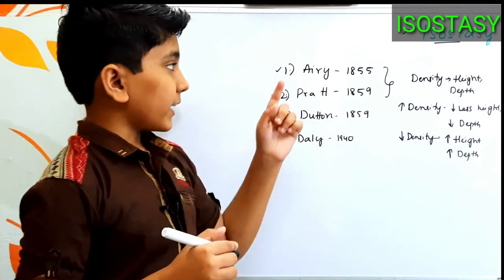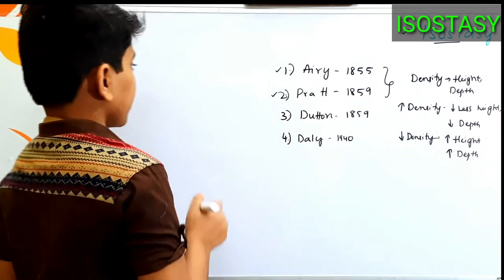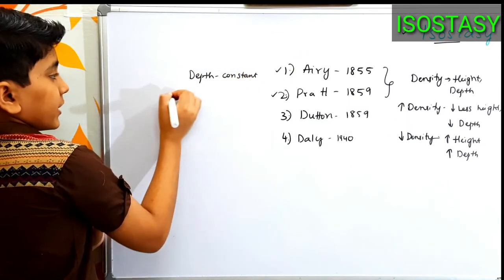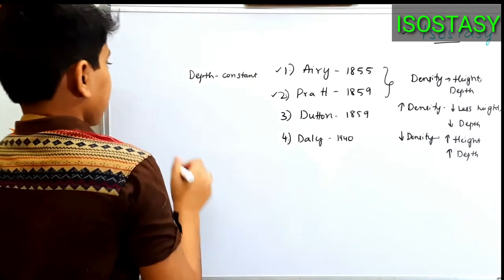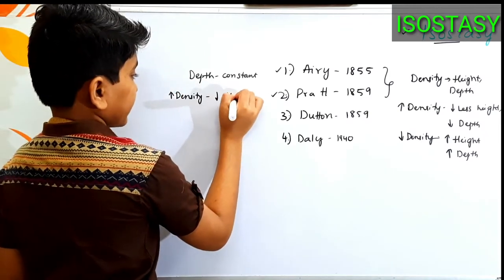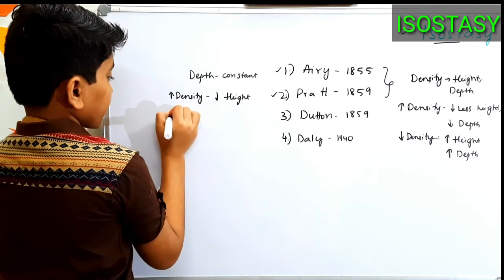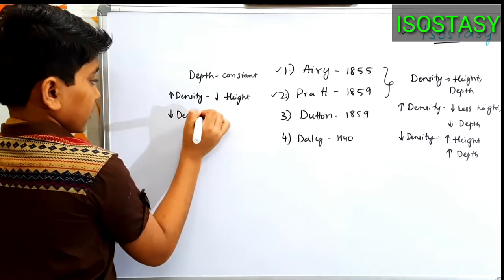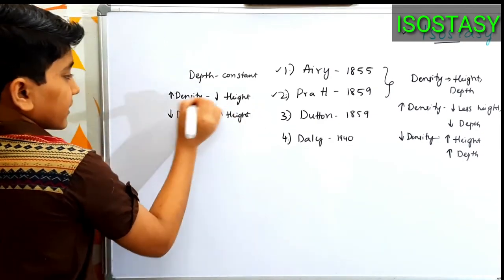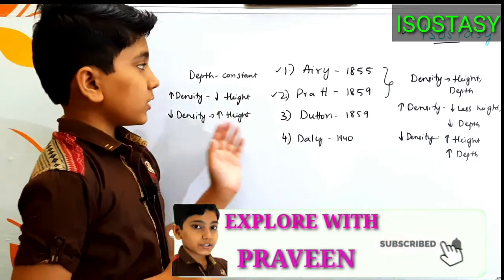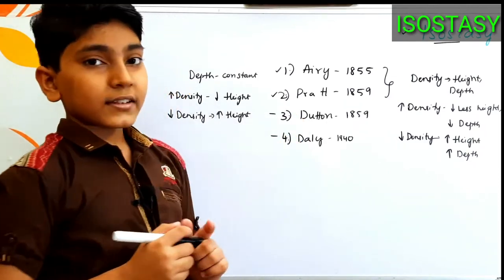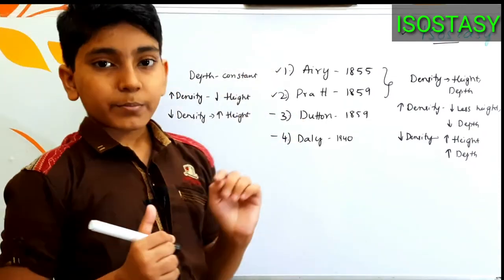Coming to Pratt's theory regarding isostasy from 1859: the depth is constant for all landforms. The depth is the same, but depending upon the density of the rocks and objects, the height of the landforms would vary. If we experience high density, then we experience less height. If we experience less density, there would be more height. So density and height are opposite to each other as per Pratt. Dutton and Daly's theories were just a combination of Airy's and Pratt's theories.